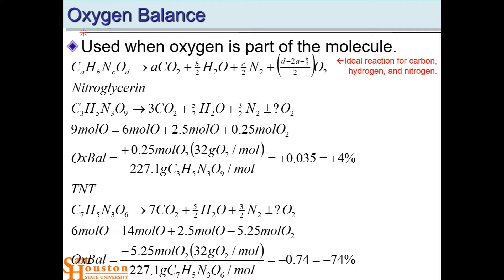We put it in this equation. We generate the three carbons, make three CO2s. The five hydrogens make five halves water. And then there's some nitrogens. You have three halves of the nitrogens. And then the oxygen. We have nine moles of oxygen on the left. We have six moles of oxygen here for the CO2, and we have five halves oxygen here, 2.5 moles of oxygen.